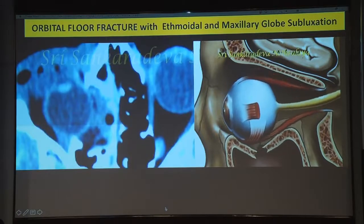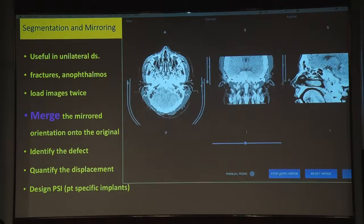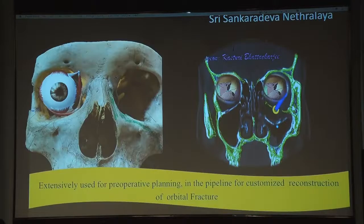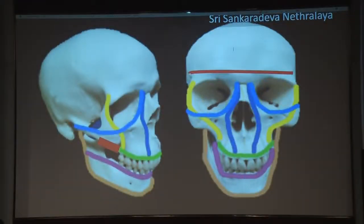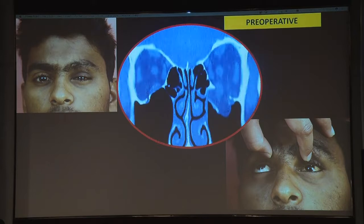Navigation with mirroring, as already mentioned, really helps in managing different fracture types. We use navigation extensively for reconstruction of complicated fractures, especially impure fractures involving the horizontal and vertical buttresses. The bones holding the face in position are called buttresses, and when these are involved in impure fractures, navigation is essential for accurate correction.